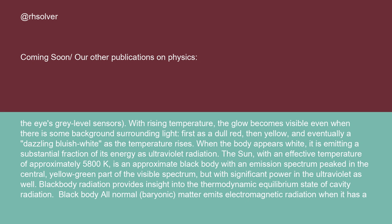The Sun, with an effective temperature of approximately 5,800 K, is an approximate black body with an emission spectrum peaked in the central yellow-green part of the visible spectrum, but with significant power in the ultraviolet as well.